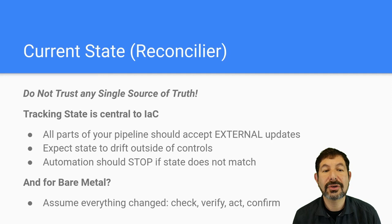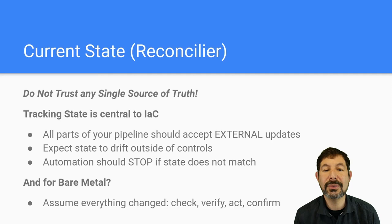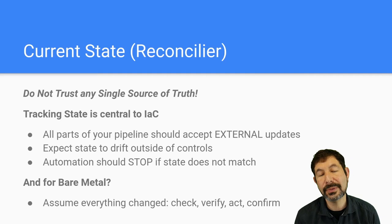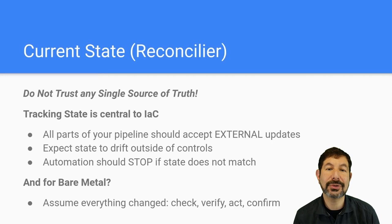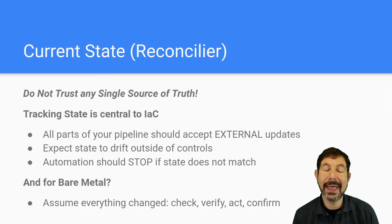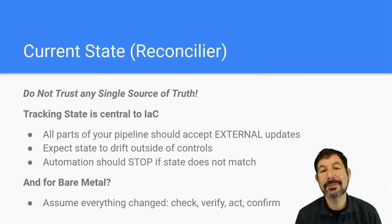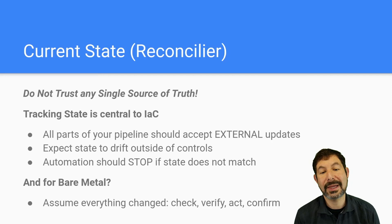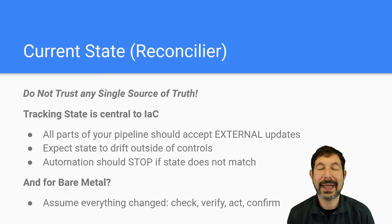Current state is a critical component here — this is what we often call the reconciler pattern. The challenge with current state is that there isn't going to be any one source of truth. If something is designed to be a source of truth, it is not going to be trustworthy in infrastructure, especially since things change outside of any one tool's control. The resilience of your whole system depends on every tool being able to recognize that fact and work with other tools to determine truth. You have to track your state throughout the system; all parts of your pipeline should expect handoffs and expect drift. Critically, automation should stop when things don't match the patterns it's expecting — especially in physical systems — this will cause more harm if it keeps trying. It's a very much true check, verify, act, and confirm.